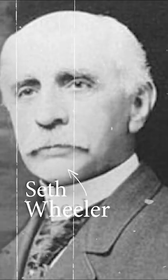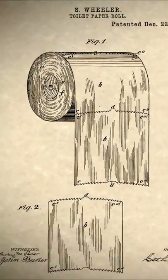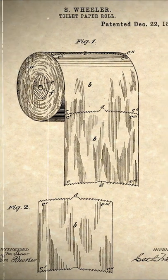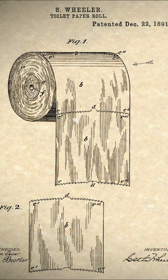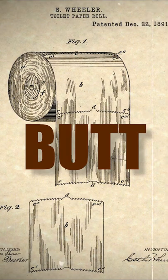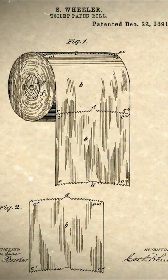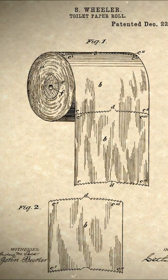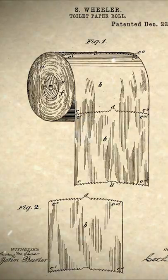So when Seth Wheeler, the creator of the roll of toilet paper, illustrated the patent to his futuristic idea in 1891, it clearly showed the leading edge of the paper was over and not under. But it was never specified anywhere that it couldn't be used in the under position, leaving place to this worldwide controversial debate that everyone's arguing about.